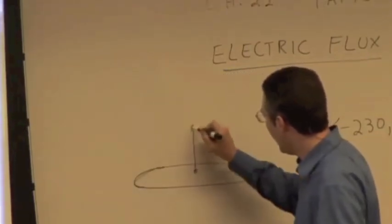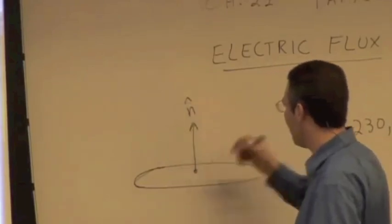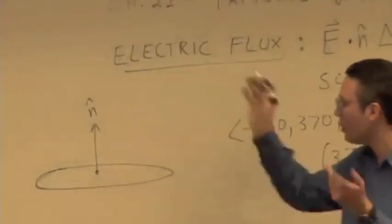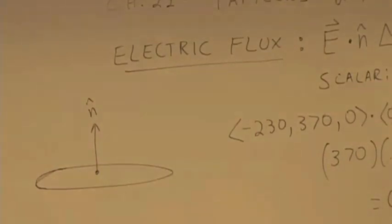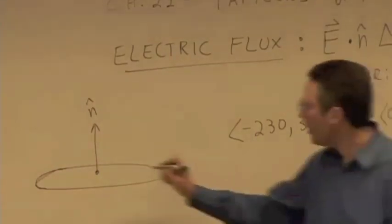And the n-hat, again, we're saying is pointing directly upward because it has to be perpendicular to the surface. The only other possibility is downward, but let's just say it's upward in this case. The electric field is pointing this way.